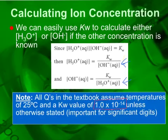Remember: because the number 1.0×10⁻¹⁴ has two significant digits, our final answer should also have two significant digits.